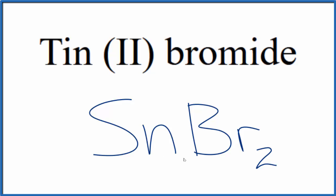If you were given this formula and asked to write the name, you'd know the tin would be 2 plus, so you'd need 2 of these bromide ions, each one 1 minus, to balance that out.